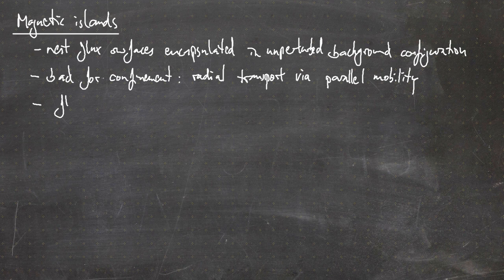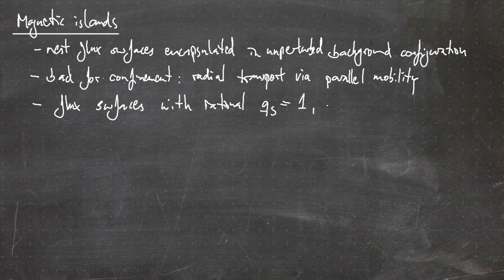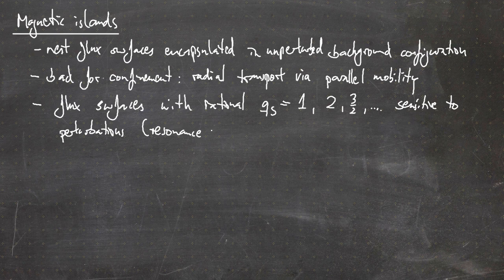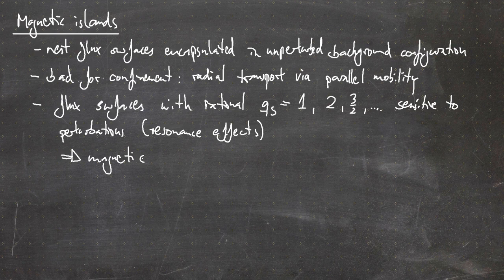Flux surfaces with a rational safety factor Q_s — for example 1, 2, or 2/3 — are sensitive to perturbations due to resonance effects. An initial perturbation can easily grow on these flux surfaces and then reside as a magnetic island. So magnetic islands are more likely to appear on flux surfaces where the safety factor Q_s has a rational value.